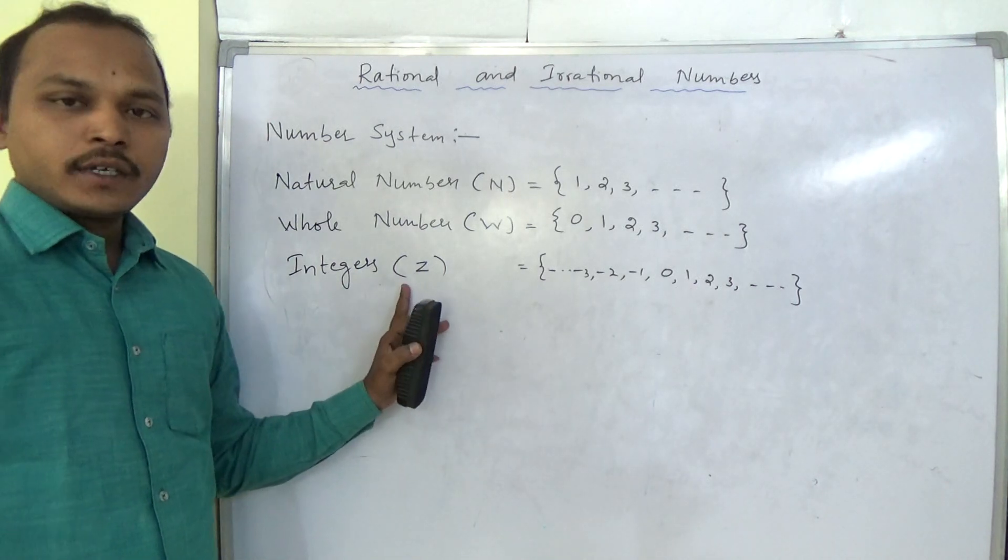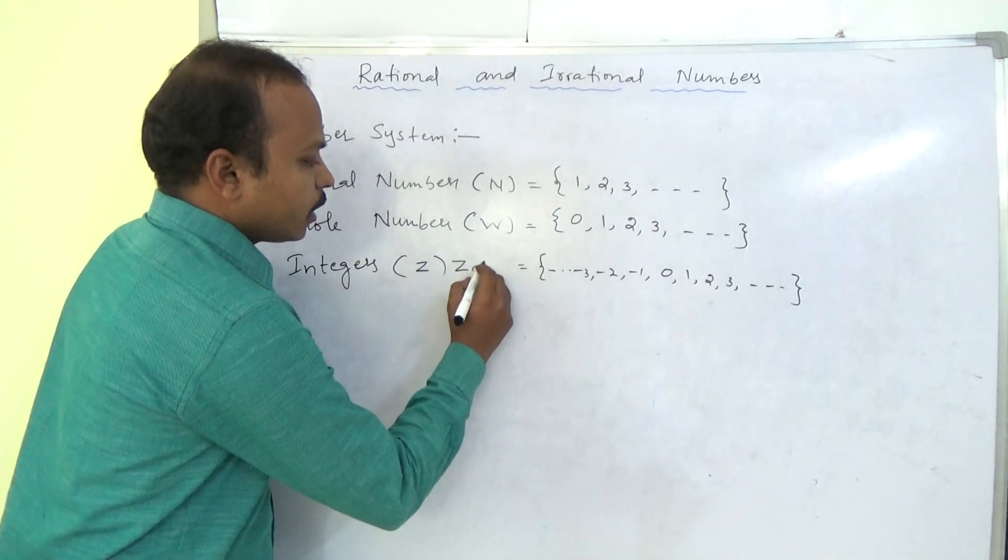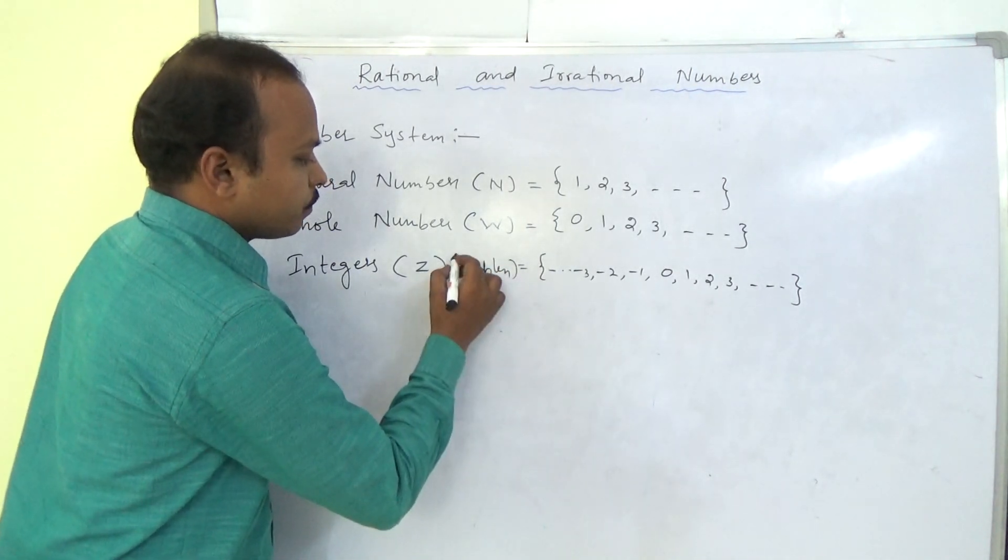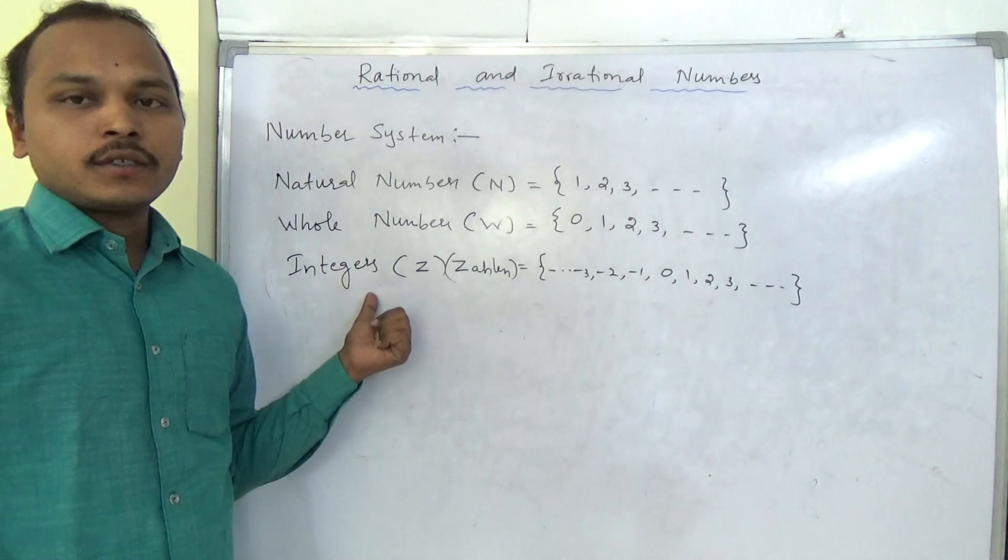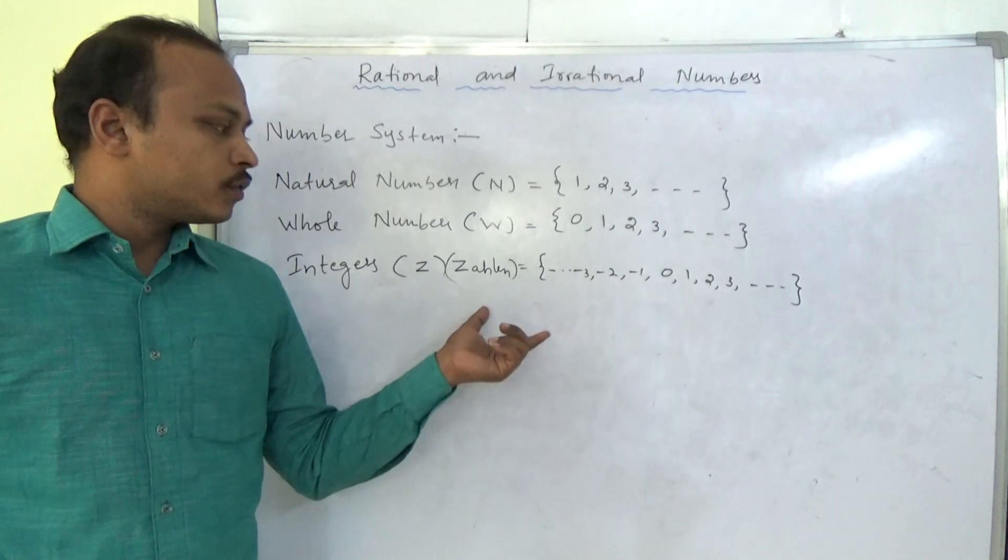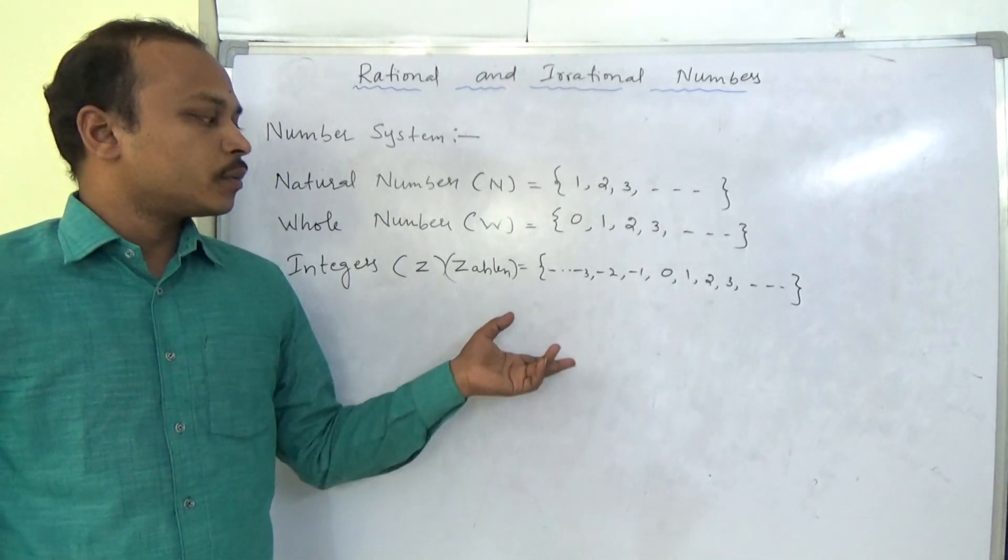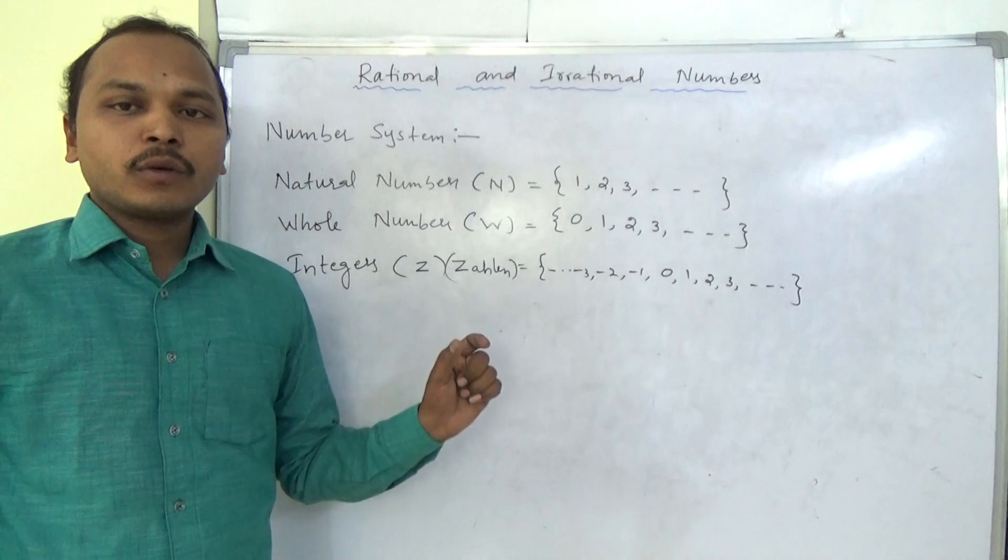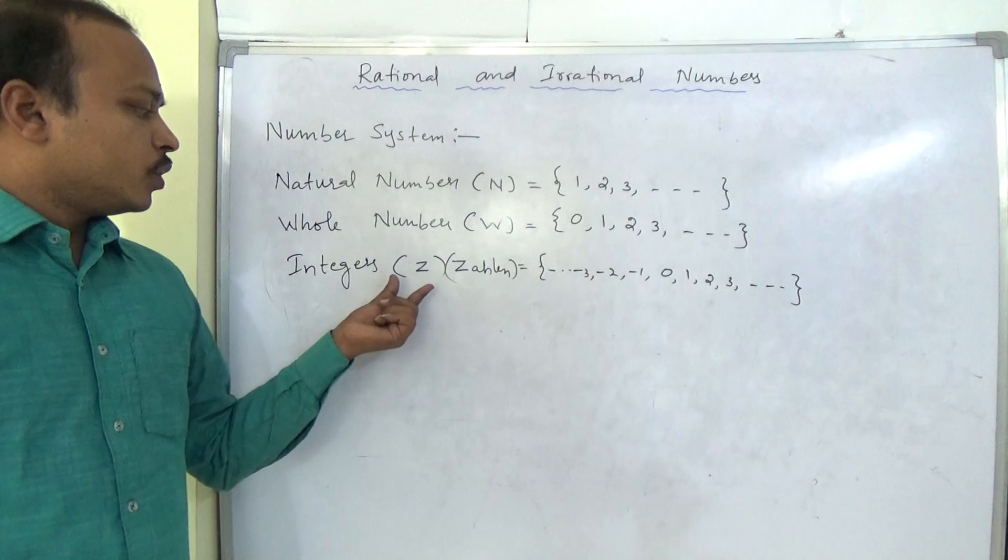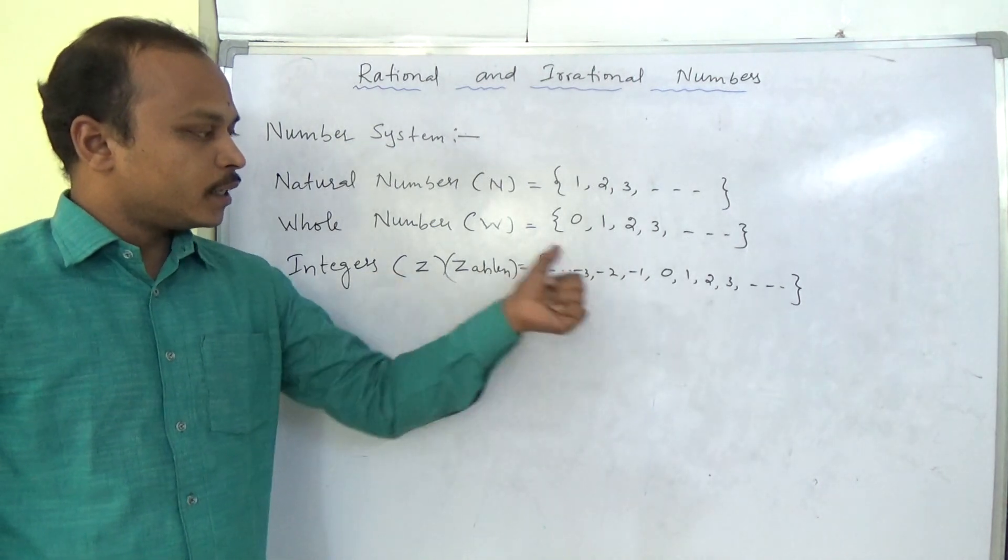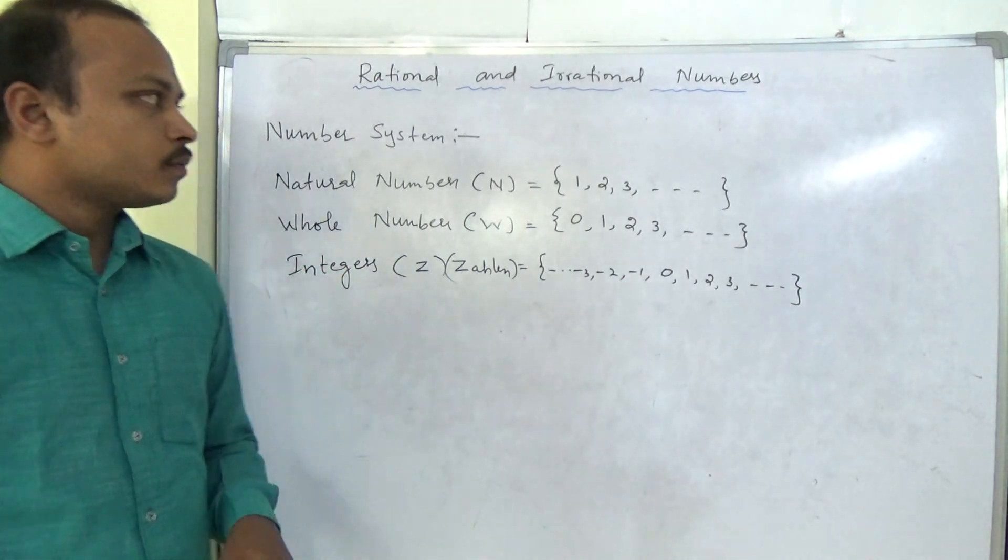So why will denote with Z? You know, Z is actually a German term. This is a German term that we use for integers to denote with Z. We will denote, some books we can see I also. Integers will denote with I. But in the future, in next classes, eleventh, twelfth classes, we have integral topics that will denote with I. So instead of confusing that, they use Z. Integers will denote with Z. They are from zero, one, two, three, and so on, up to positive and negatives.